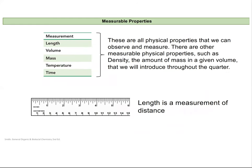So, let's walk through physical properties that we can actually measure and observe: length, volume, mass, temperature, and time. We'll add some more like density a little bit later in this chapter.